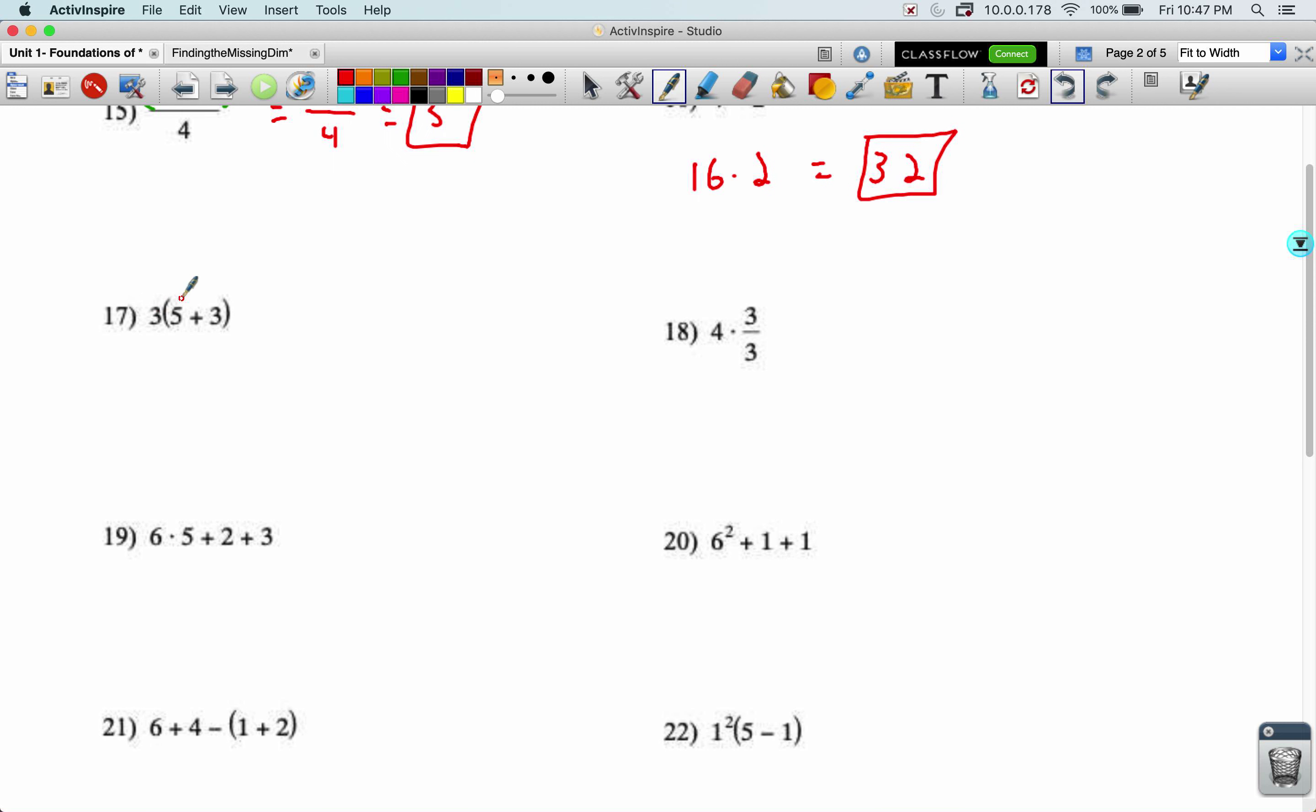Three times parentheses, five plus three. Parentheses comes before the multiplication. So I'm going to do three times eight. I can drop the parentheses now that it's down to a single number and three times eight becomes a 24.